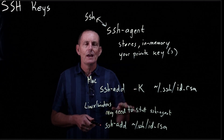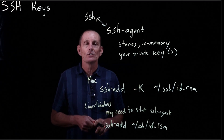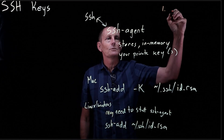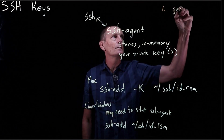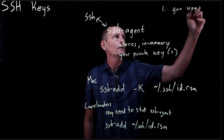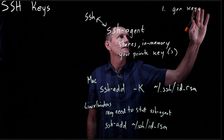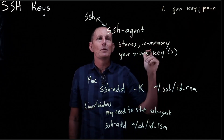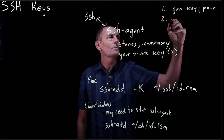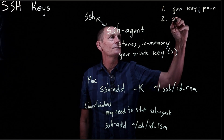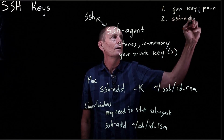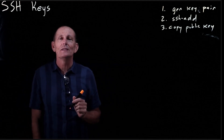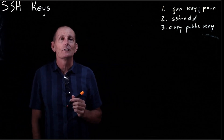So once you've added it, step one is we generate the key pair — a public and private key. Step two, we run ssh-add, and now we need to go ahead and copy our public key onto the host that we're trying to log into.